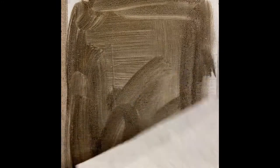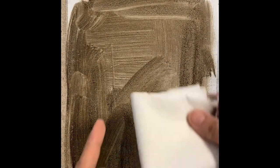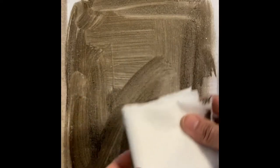Once you have your wash on there, I recommend taking this Viva paper towel, folding it into a square so that you end up with a nice clean edge that you can use to make both vertical and horizontal strokes to cover the canvas.